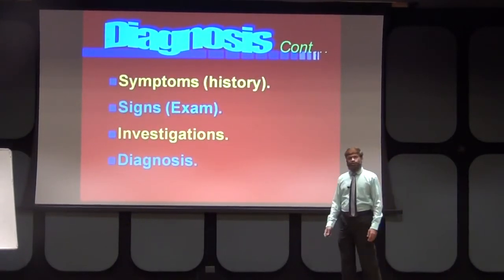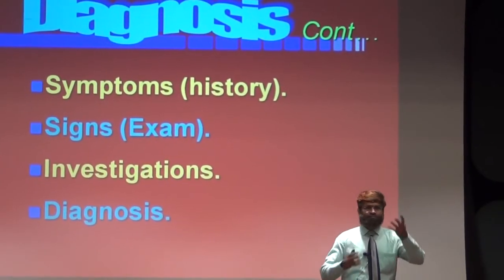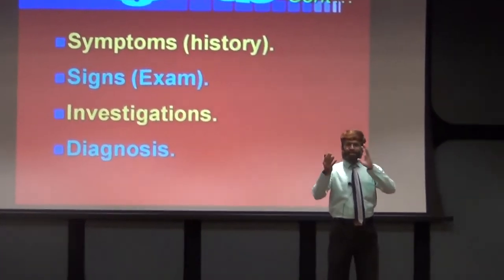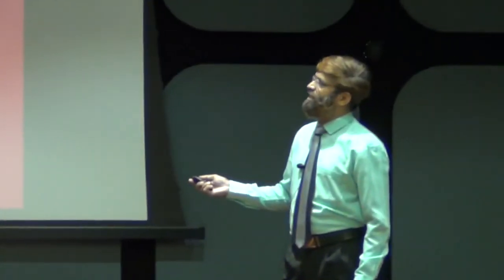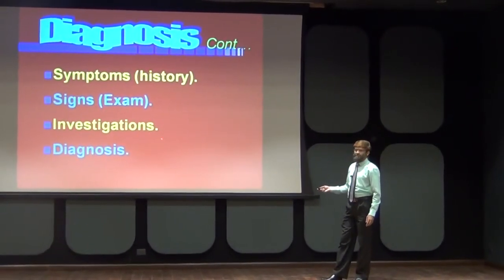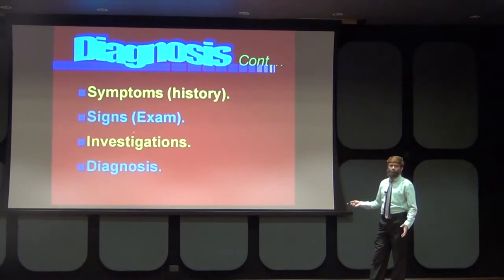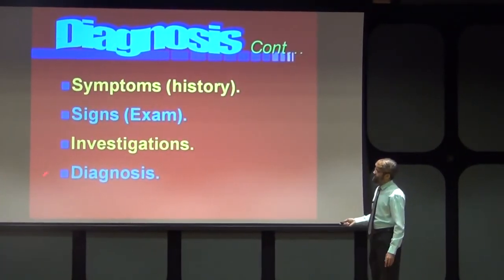For diagnosis, we use the tripod stand approach — three legs: first, symptoms obtained from precise history; second, signs obtained from proper examination; and third, investigation. All three together will help us make our diagnosis. The differentiating points between adenomyosis (endometriosis interna) and extra-uterine endometriosis externa include: adenomyosis is mostly seen in females in their forties while endometriosis externa is seen in females in their thirties; adenomyosis patients are multiparous while endometriosis externa patients are nulliparous; and adenomyosis is seen in low socioeconomic strata while endometriosis externa is seen in high socioeconomic strata.